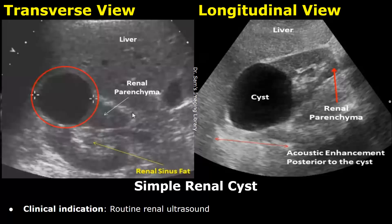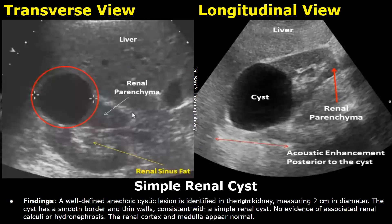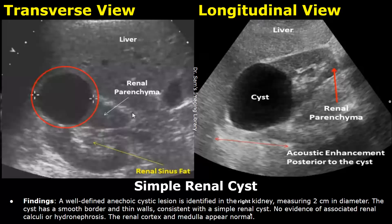The first case is of simple renal cyst. The clinical indication in this example is a routine ultrasound. These are the findings. You can write: a well-defined anechoic cystic lesion is identified, then whether it is in the right or left kidney, and the size of the cyst. Then you can write the cyst has a smooth border and thin walls consistent with a simple renal cyst. Then you can write about other abnormalities such as calculi or hydronephrosis, and about the appearances of the renal cortex and medulla.